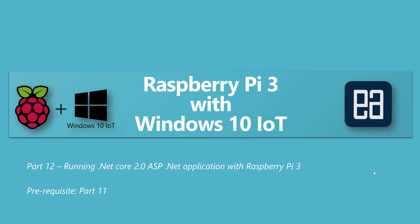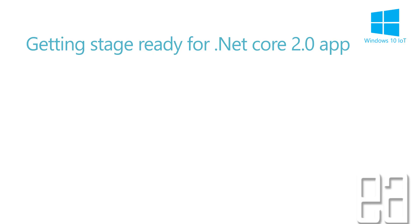Hi, my name is Karthik and I am from executeautomation.com. Welcome to part 12 of our Raspberry Pi 3 with Windows 10 IoT video series. In this part we will be talking about running .NET Core 2.0 ASP.NET application with Raspberry Pi 3. Before watching this part I would request you to watch part 11, since in that part we executed a console application of .NET Core 2.0, and in this part we are going to work with an ASP.NET application on Raspberry Pi.